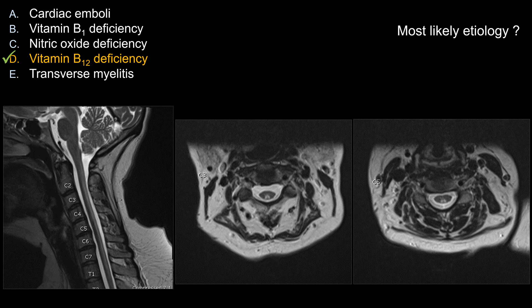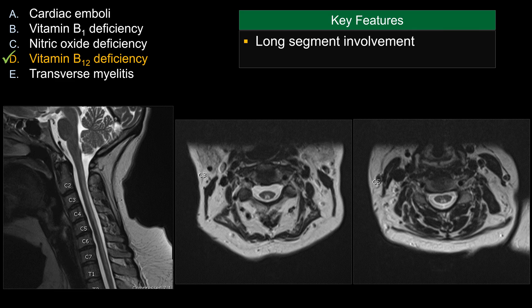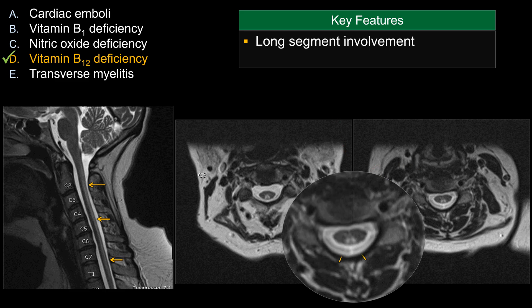The correct answer in this case is choice D, vitamin B12 deficiency. On the sagittal view, you can see there's a long segment of abnormal T2 signal involving the posterior aspect of the spinal cord. That can be better seen on the selective cross-sectional image at C3 and C5 on this T2-weighted image. There's a very distinct pattern of symmetric involvement of the dorsal column, and that is a key feature.